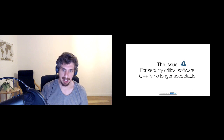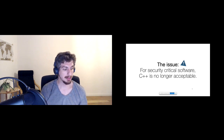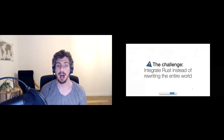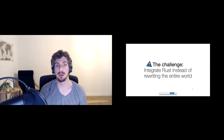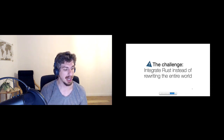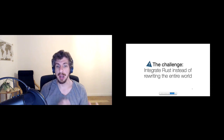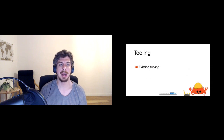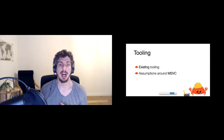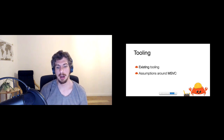The real challenge is integrating Rust rather than rewriting the entire world. We have a lot of C and C++ at Microsoft, and that code is not going anywhere — in fact, C++ continues to be written at Microsoft and will be for a while to come, if not forever. The challenge is to get Rust integrated into that world so we can benefit from Rust without having to do everything all at once. The first specific challenge is existing tooling — specifically assumptions around MSVC. Rust runs on LLVM, and we are almost exclusively an MSVC shop at Microsoft.